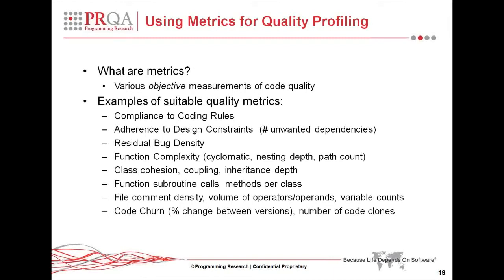You can also have compliance or adherence to design constraints — for example, the number of unwanted dependencies in a project. Residual bug density is another measure of residual issues that may exist in code. Then we move on to more objective measures of coding attributes, such as function complexity, which covers cyclomatic complexity, depth of nesting, or path count through the function.